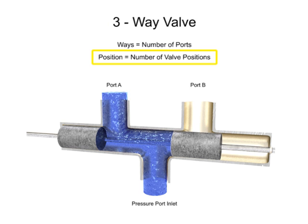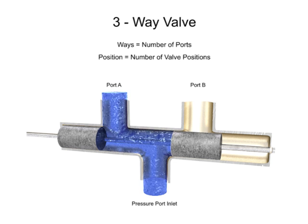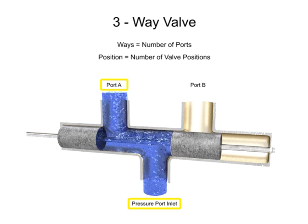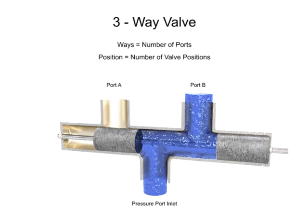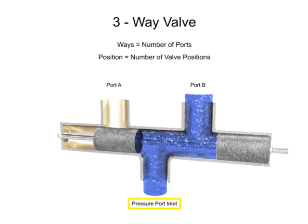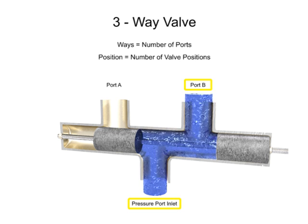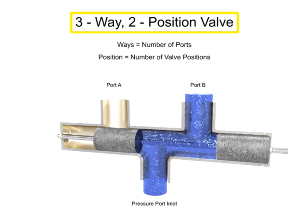The term position refers to the number of discrete operating positions of the internal valve element. For this spool valve, one position allows fluid to flow from the inlet to port A and a second position allows fluid to flow from the inlet to port B. Therefore, this is a two-position valve.